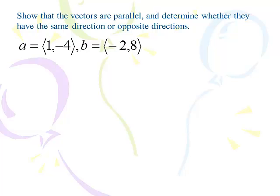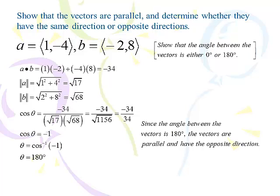Show vectors (1, -4) and (-2, 8) are parallel and determine direction. Dot product: 1×(-2) + (-4)×8 = -2 + (-32) = -34. Magnitude of a: √(1² + 4²) = √17. Magnitude of b: √(2² + 8²) = √68. Then √17 × √68 = √1156 = 34. So cosθ = -34/34 = -1. The inverse cosine of -1 is 180 degrees. Therefore the vectors are parallel and going in opposite directions. Inverse cosine of 1 means same direction; inverse cosine of -1 means opposite direction — both cases are parallel.